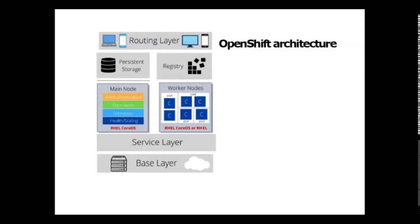The main node is responsible for managing the cluster and takes care of the worker nodes. It contains four main tasks: API and authentication, data store, scheduler, and health and scaling. Any administration request or task goes through the API, and these requests are SSL-encrypted and authenticated to provide security to the cluster.